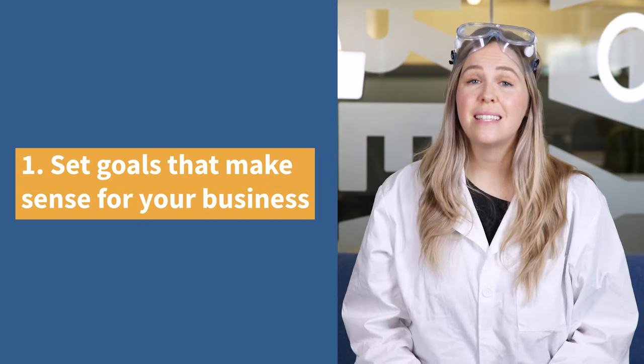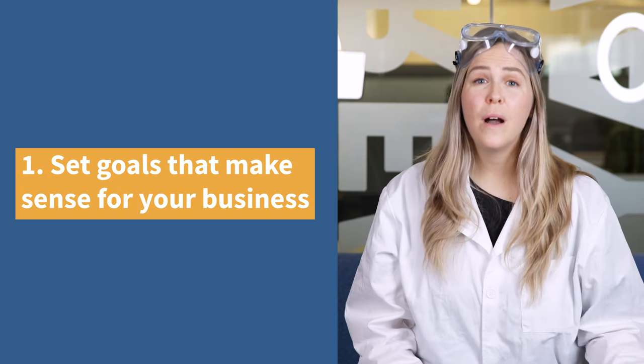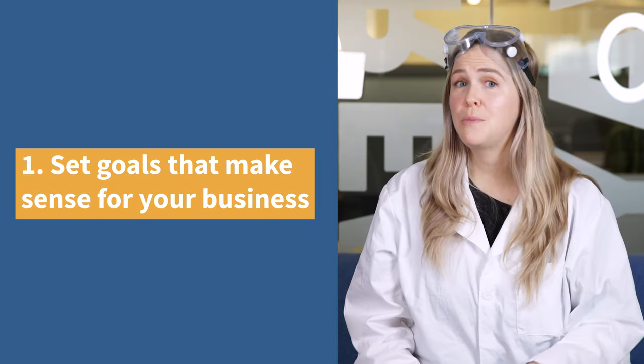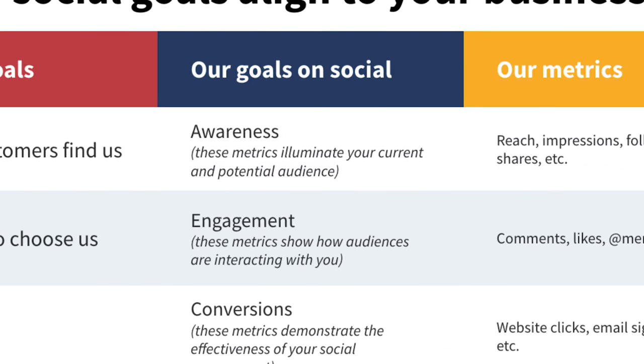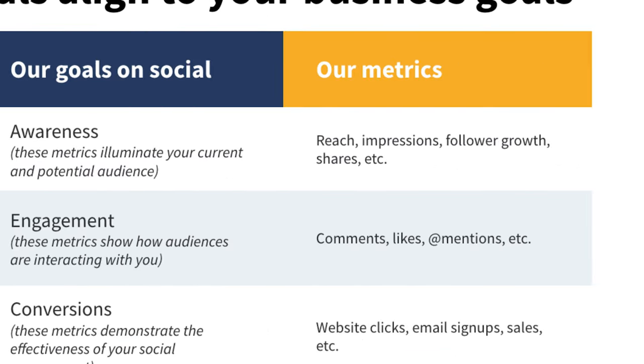Step one is setting goals. It's easy to get overwhelmed by deciding what to post and which metrics to track, but you need to focus on what you want to get out of social media to begin with. Don't just start posting and tracking everything. Match your goals to your business and your metrics to your goals. For example, if you're trying to attract new customers, your first goal is to get attention or awareness. The metrics you'll want to watch are things like reach, followers, and growth.